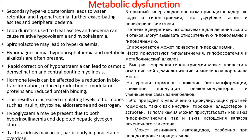Metabolic dysfunction. Secondary hyperaldosteronism leads to water retention and hypernatremia, further exacerbating ascites and peripheral edema. Loop diuretics used to treat ascites and edema can cause relative hypovolemia and hypokalemia. Spironolactone may lead to hyperkalemia. Hypomagnesemia, hypophosphatemia, and metabolic alkalosis are often present. Rapid correction of hypernatremia can lead to osmotic demyelination and central pontine myelinolysis.